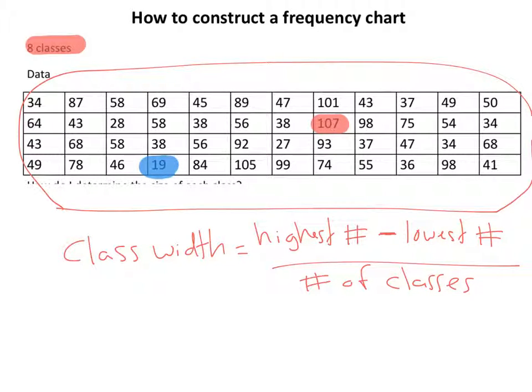So you're going to take 107, which is your highest number, and you're going to subtract your lowest number from it, which is 19. And then you're going to divide that number by the number of classes you have, which as we were told earlier is 8. So 107 minus 19 gives us 88, and 88 divided by 8 gives us 11.